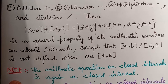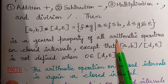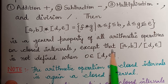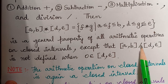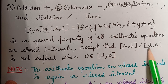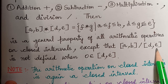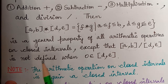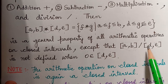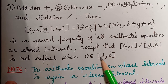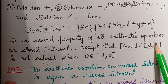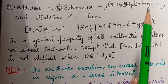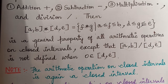This is a general property of all arithmetic operations on closed intervals, except for [a, b] divided by [d, e]. When this interval is divided by that interval, it is not defined when 0 is an element of [d, e]. If 0 is an element of this interval, this operation is not defined. Otherwise, it is defined for all arithmetic operations.